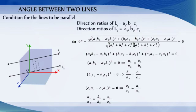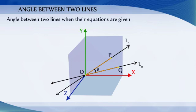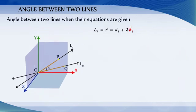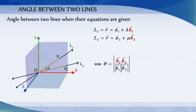Now let us find the angle between two lines when their equations are given. If theta is the acute angle between the lines R vector equals A1 vector plus lambda B1 vector and R vector equals A2 vector plus mu B2 vector, then the angle between these two straight lines is given by cos theta equals modulus of (B1 dot B2) over (mod B1 into mod B2).